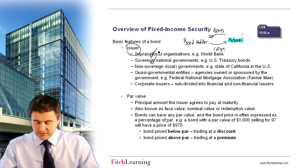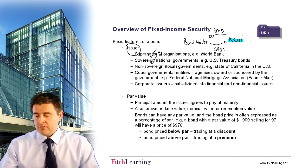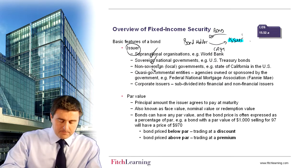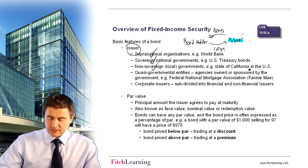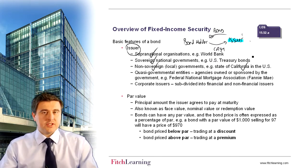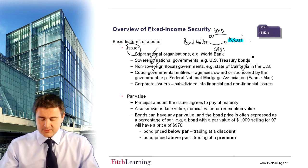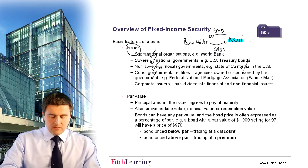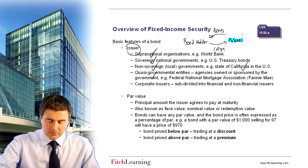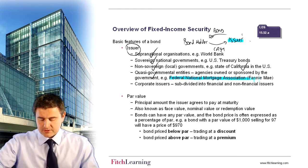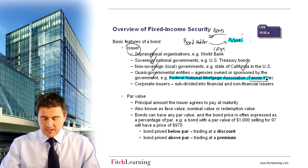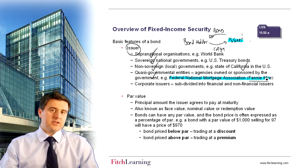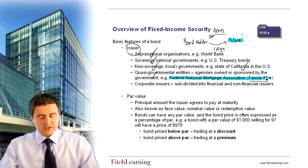It could be sovereign national governments — for example, the US Treasury, in order to cover the government spending that they carry out, they may have to issue bonds to cover that spending. You've got non-sovereign or local governments. So acting within the jurisdiction of the US, there are sub-governments — for example, the state of California has the ability to raise capital by issuing their own bonds. We've got quasi-government entities, so a well-known one would be the Federal National Mortgage Association, also known as Fannie Mae.